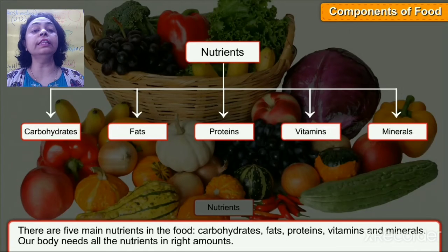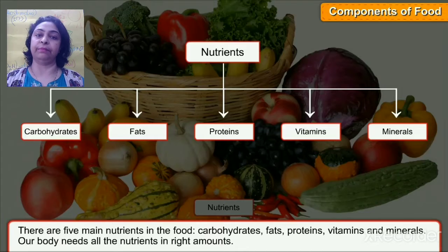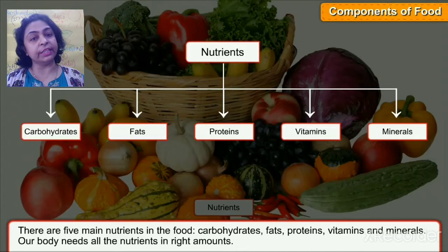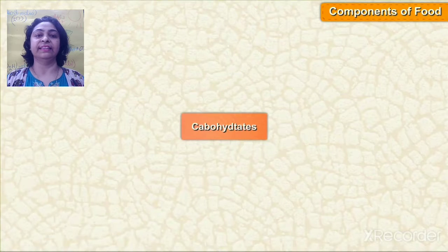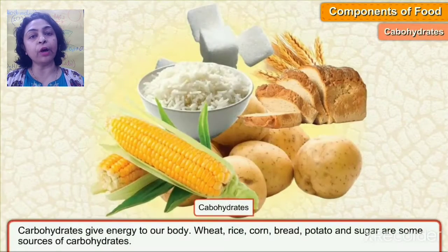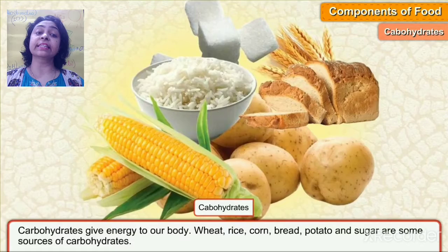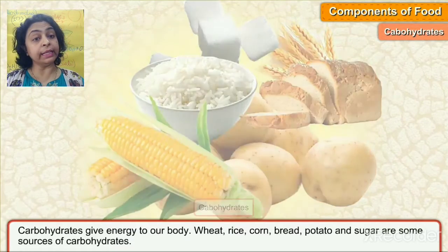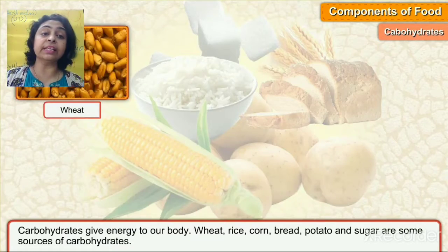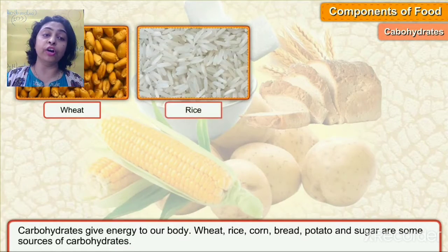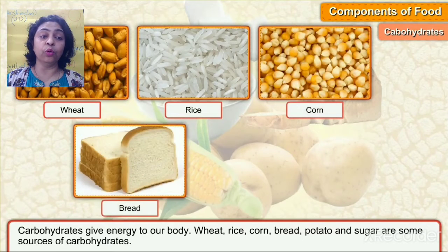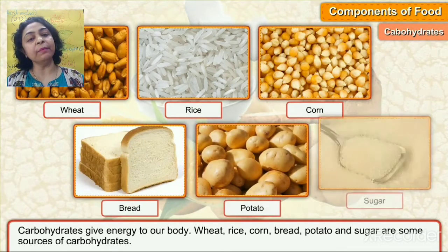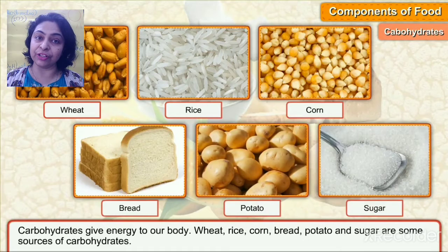Our body needs all the nutrients in the right amount — carbohydrates, fats, proteins, vitamins, minerals, everything. First, carbohydrates. Carbohydrates give energy to our body. Wheat, rice, corn, bread, potato, and sugar are some sources of carbohydrates.